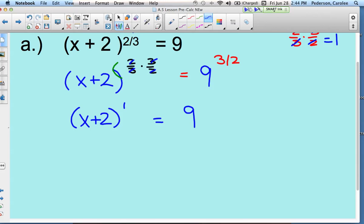Now on the right side, that nine to the three-halves - if you remember fractional exponents, my three stays underneath, and then my two is my index. Now I need to do some simplifying on that right side.